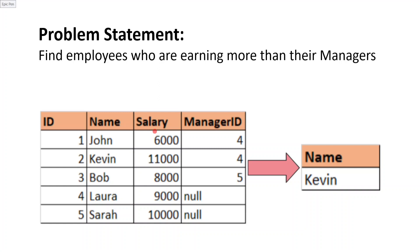Let's get into the problem statement. We need to find employees who are earning more than their managers. The input table has columns: employee ID, name, salary, and manager ID. For example, John's salary is 6000 and his manager ID is 4, which is Lara. Lara is earning 9000 while John is earning 6000, which means John is earning less than his manager.